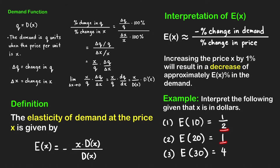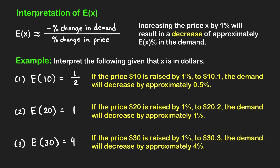Let's interpret the elasticity function values at these unit prices. First, how do we interpret e of 10 equal to one half? This means that if the unit price of $10 is raised by one percent to $10.10, then the demand will decrease by approximately one half percent, which is 0.5%. A small percent increase in the price results in a smaller percent decrease in the demand, so increasing the price may make sense.